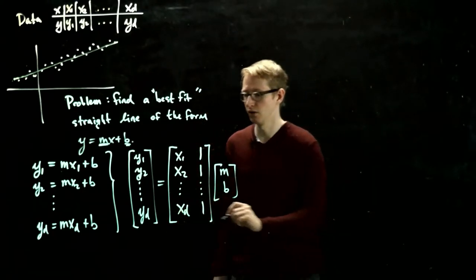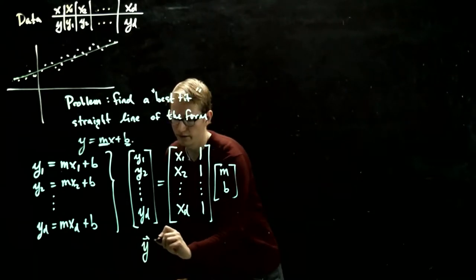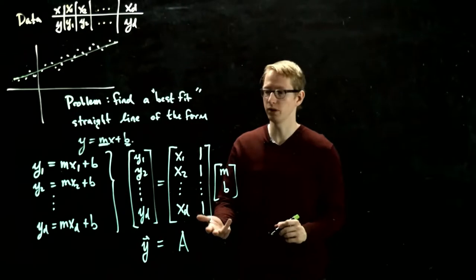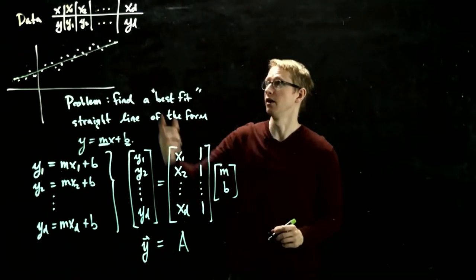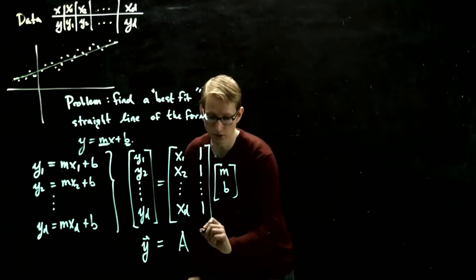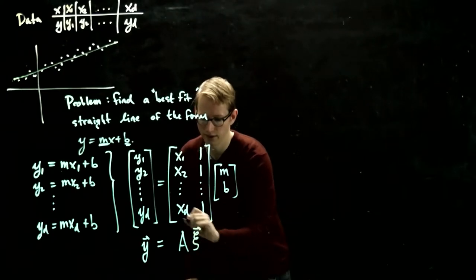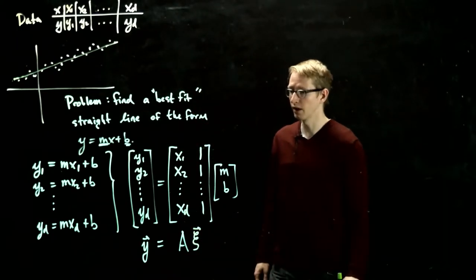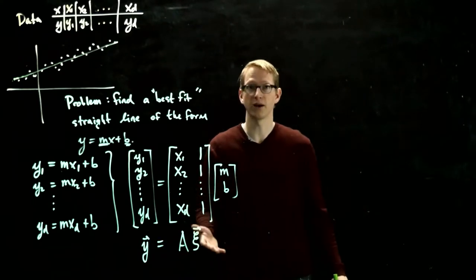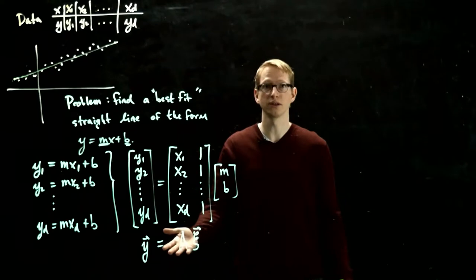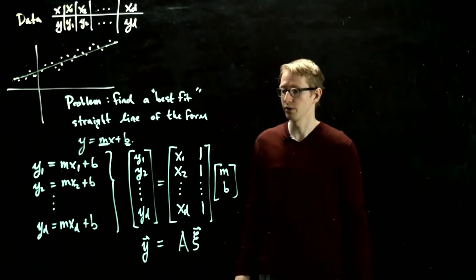So this matrix equation, which we can write as y vector equals A, and I don't want to write x as we did before because I don't want to conflate it with the data points that are also labeled by x. And so instead we'll write this as A xi. So this is the system that we would like to solve, but we know that there is in general no solution to this problem. So what can we do?